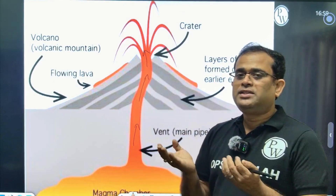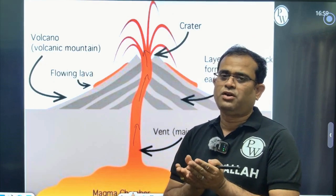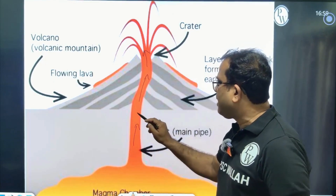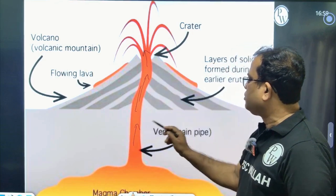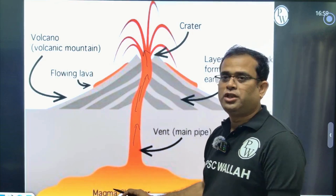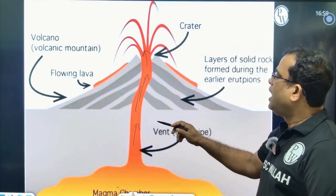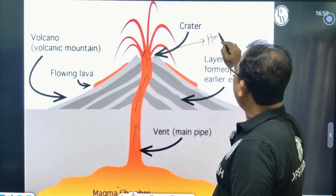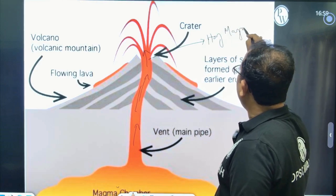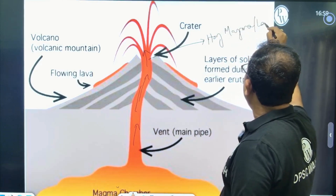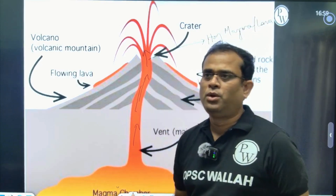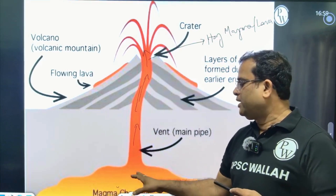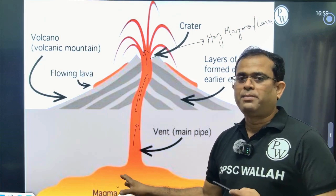When there is a crack and fissure in the surface, this is your magma chamber. Hot magma and lava comes out from it. When there is magma, this magma is generally stored in the magma chambers.